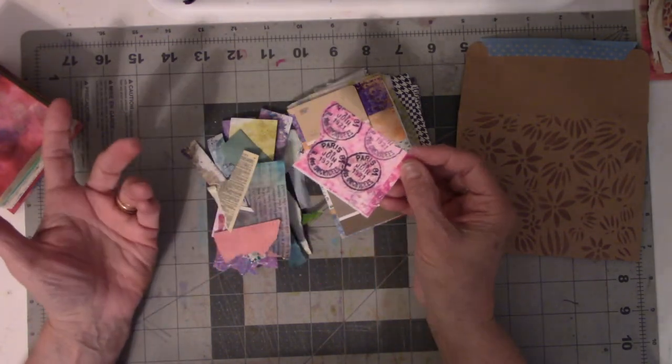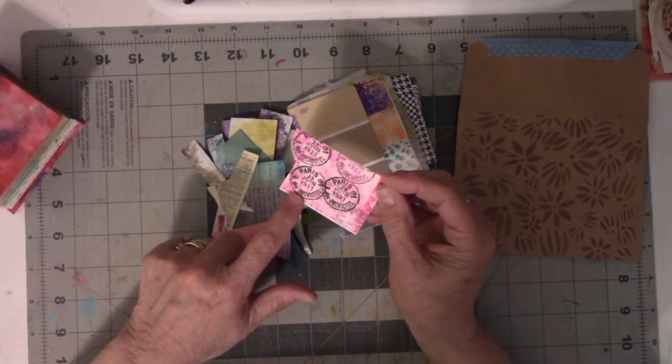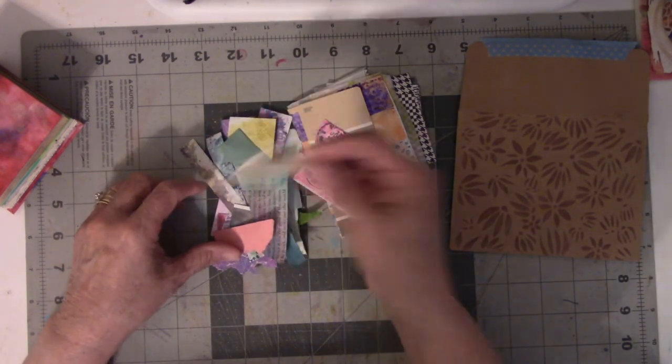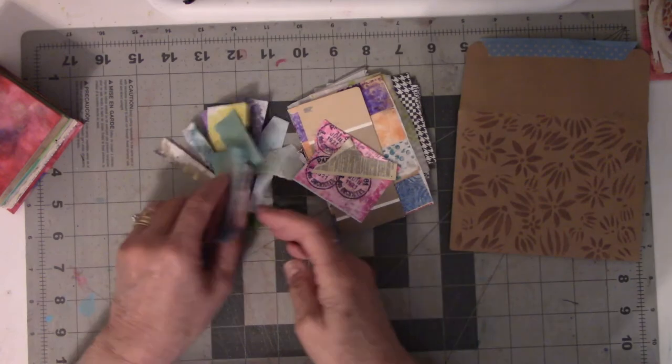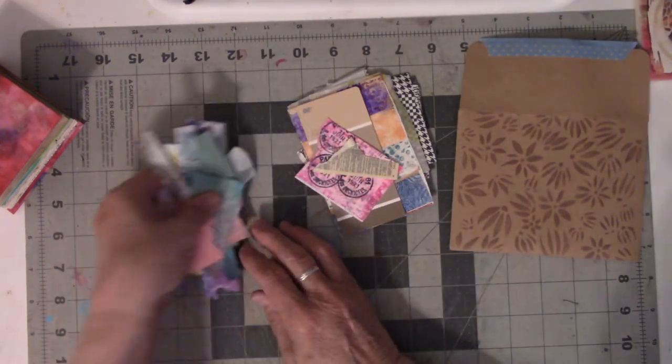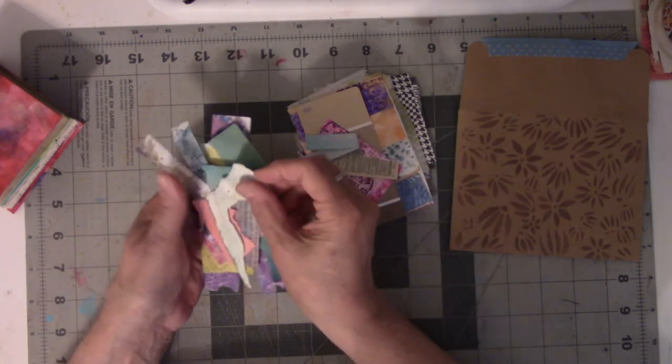Here's something I printed stamps on it, postage stamps from Paris, France. There's text, there's all kinds of bits and pieces of paper, and I kind of like to refer to these as table scraps.